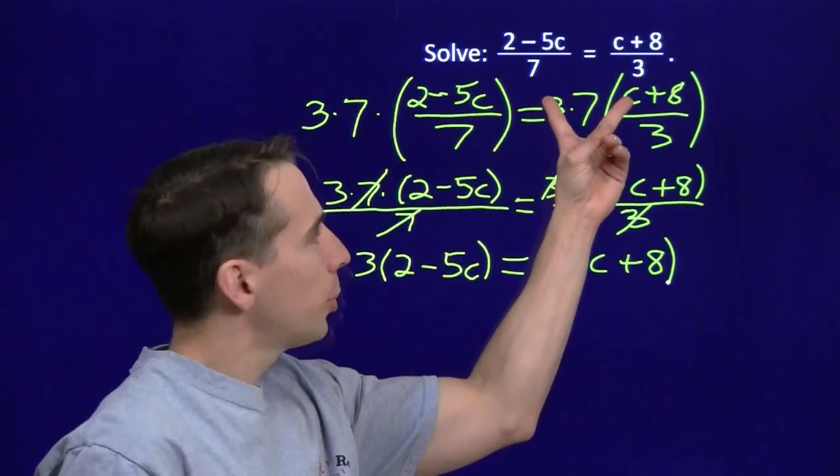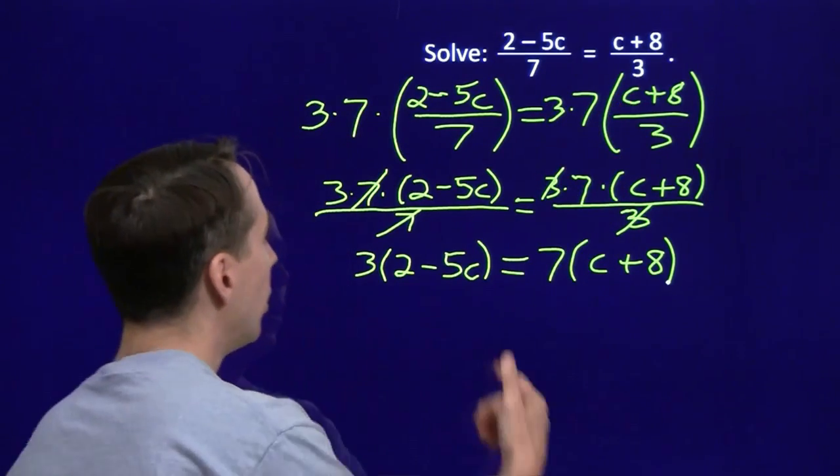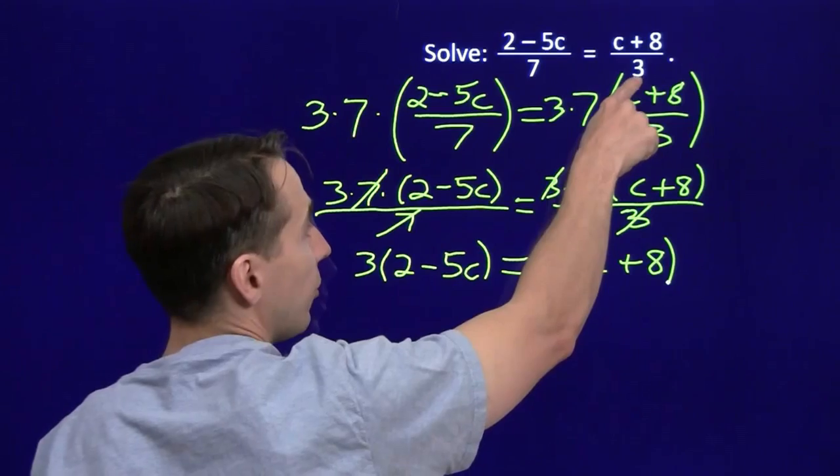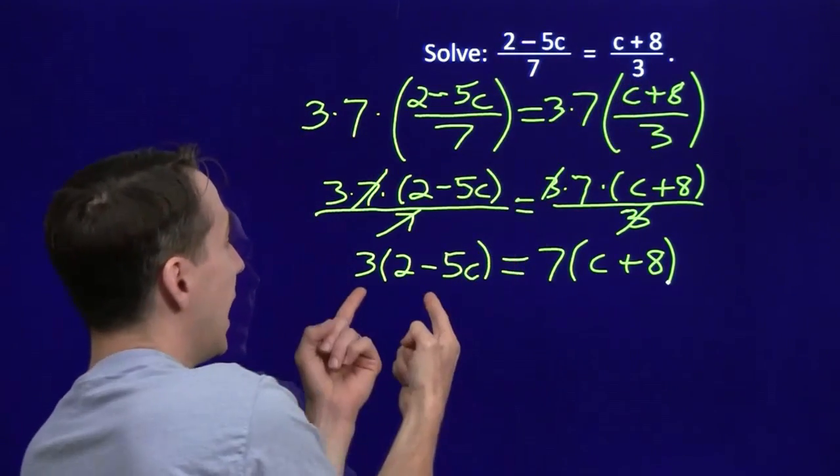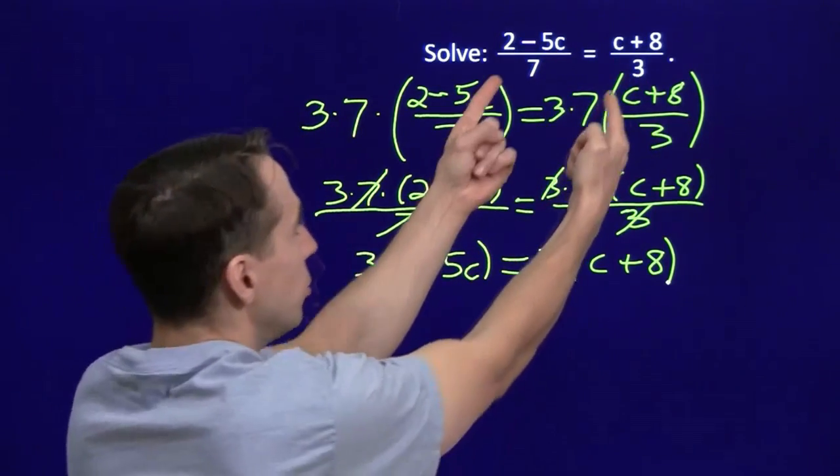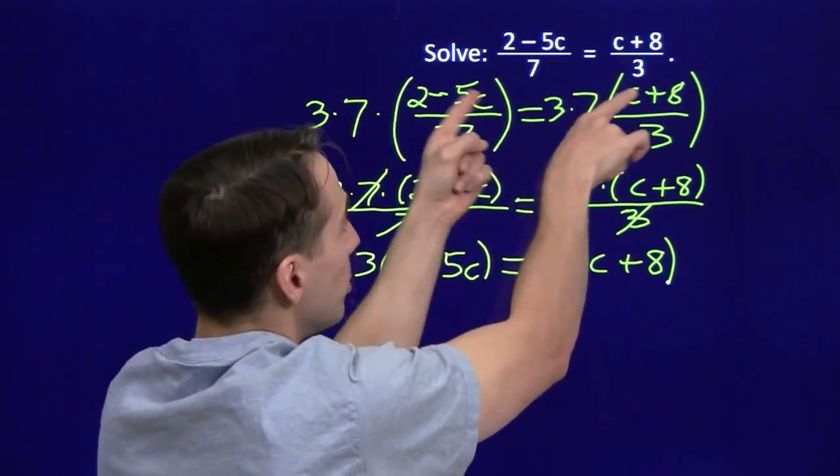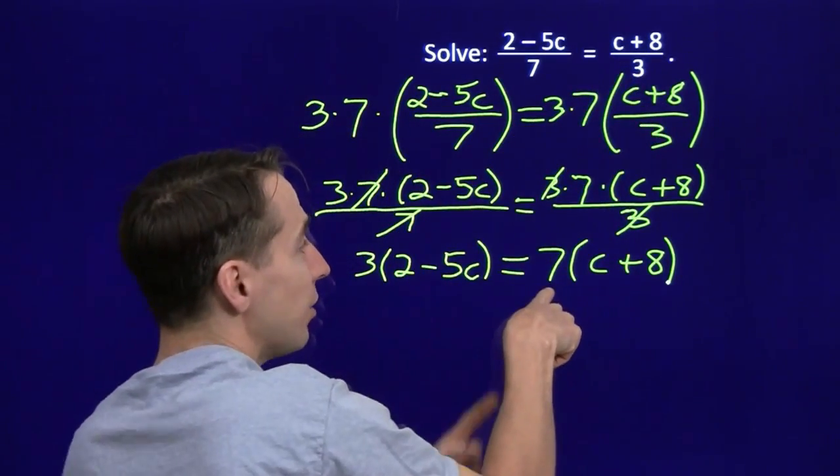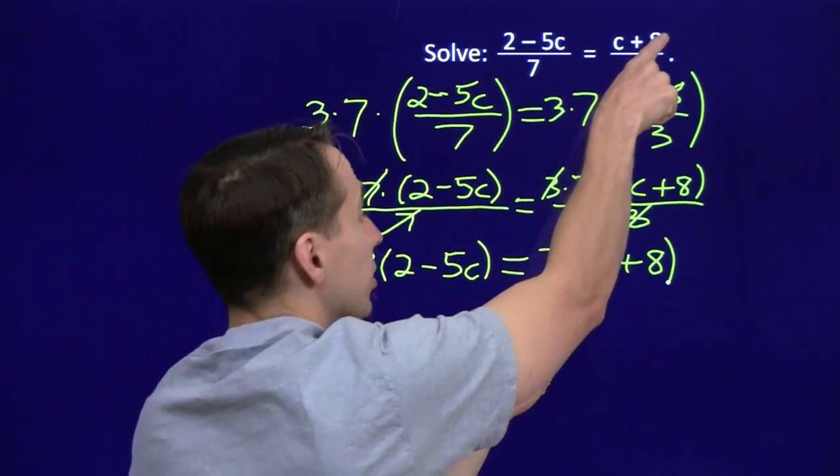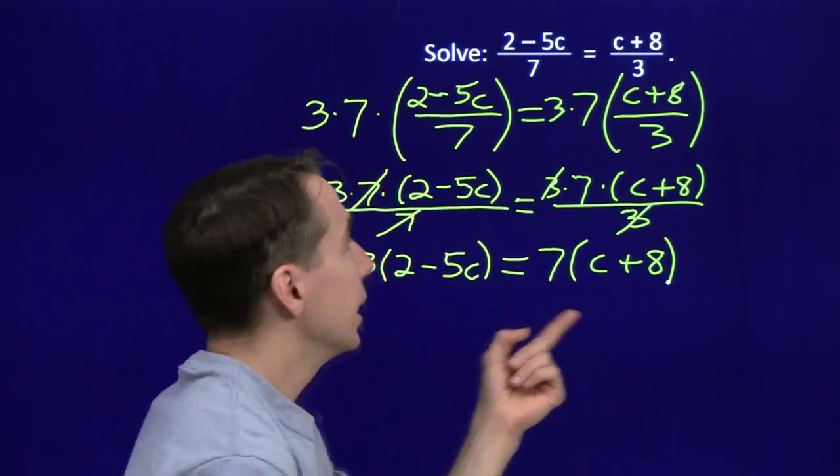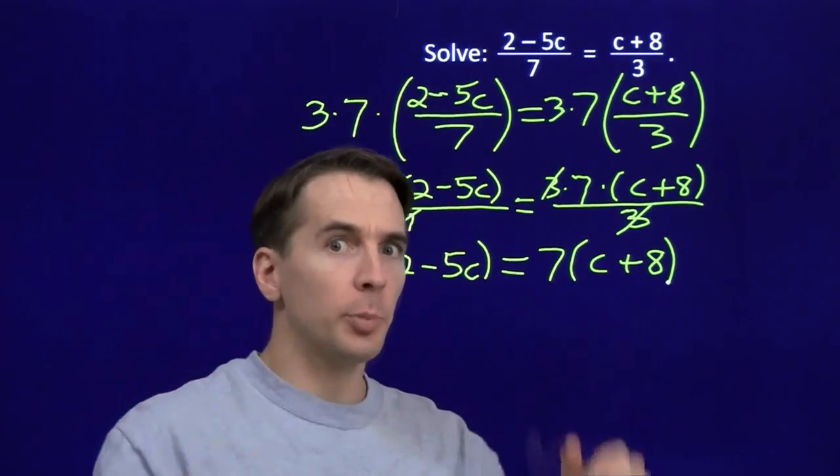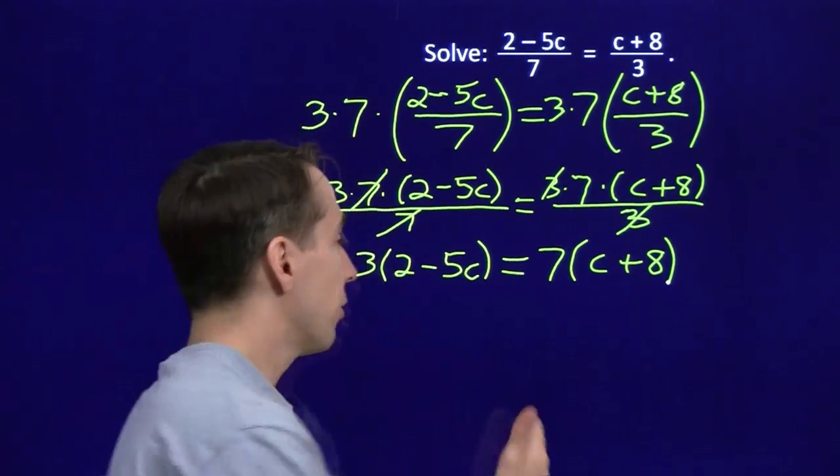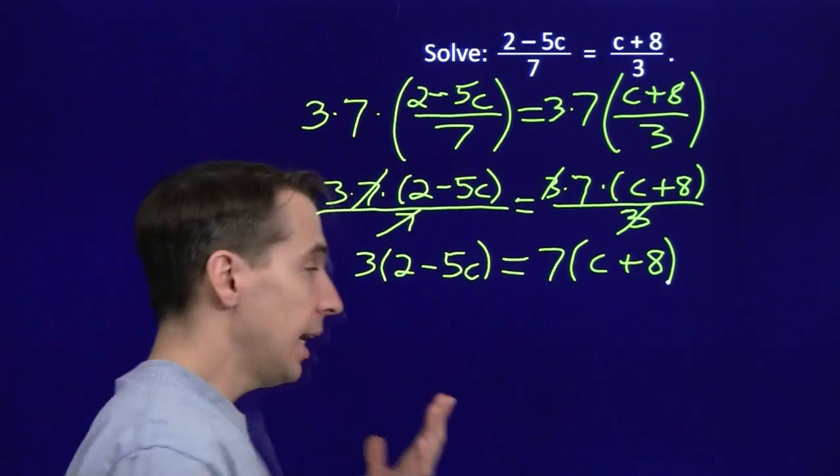And look at what happened when we multiplied by both denominators. Over here on the left the 7 cancels with the 7 and we're left with the denominator of the right and the numerator of the left, 3 times 2 minus 5c. Over here on the right when we multiplied by both denominators, the 3 and the 7, the 3s canceled out and the 7 remains. The denominator of the left times the numerator of the right. Some people call this cross-multiplying but I want you to think of it as multiplying by both the denominators to get rid of the fractions.